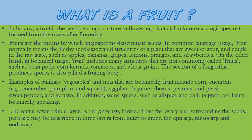The outer, often edible layer is the pericarp, formed from the ovary and surrounding the seeds. Pericarp may be described in three layers from outer to inner: the epicarp, mesocarp, and endocarp.